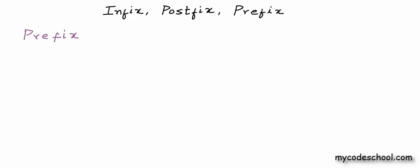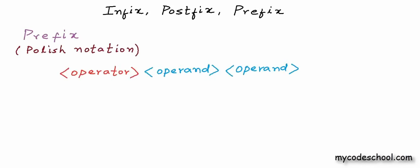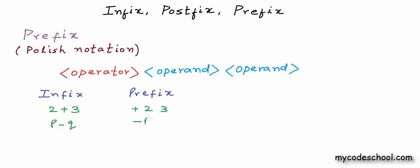Prefix notation was proposed in 1924 by a Polish logician and is also known as Polish notation. In prefix notation, the operator is placed before the operands. The expression 2 plus 3 in infix is written as plus 2 3 in prefix — the plus operator is placed before the two operands 2 and 3. And p minus q is written as minus p q. Just like infix notation, an operand in prefix notation doesn't always have to be a constant or variable — it can be a complex prefix expression itself.